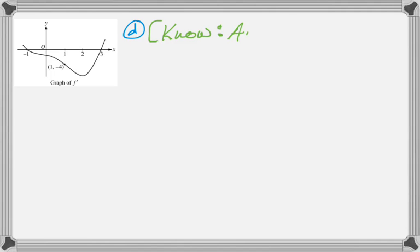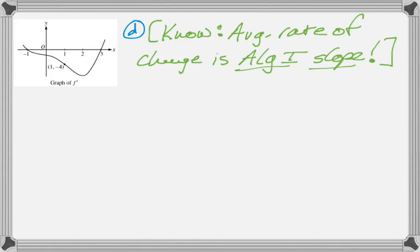In part d, we're looking for the average rate of change. And one thing you definitely need to know is that average rate of change is just algebra 1 slope. Okay, there's nothing more to it. Sometimes it's hard to figure out the y values and all that, but we're just doing algebra 1 slope.